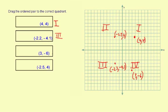3, negative 6. That's in quadrant 4. And negative 2.5, 4. That one is in quadrant 2.